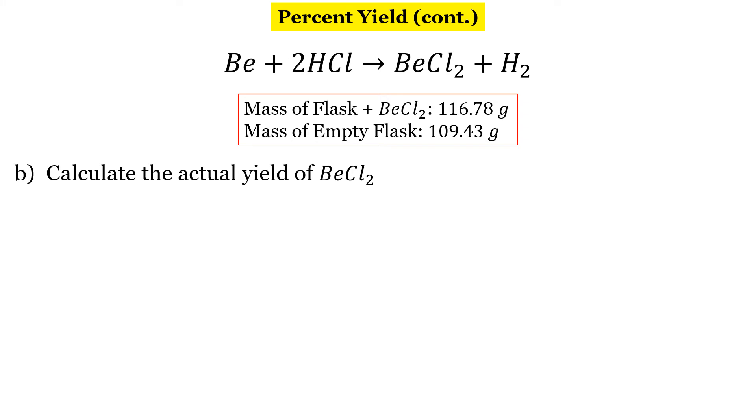So now we're going to calculate the actual yield. We perform this lab and our product is in a flask. What we're going to do is subtract the mass of the flask and the product from the mass of the empty flask. So it's going to be 116.78 grams minus 109.43 grams. And I get an answer of 7.35 grams. So that is just product. By subtracting the empty flask from the product and the flask, we get just the product. So that is our actual yield.